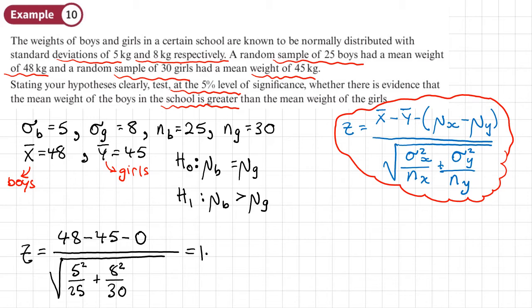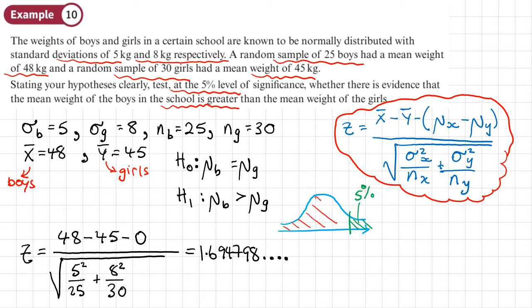From our calculators we get 1.6948. This is an upper tail test at five percent, meaning ninety-five percent of the area is to the left. Using the inverse normal on the calculator with an area of 0.95 and the standard normal distribution, that gives a critical value of 1.6449.